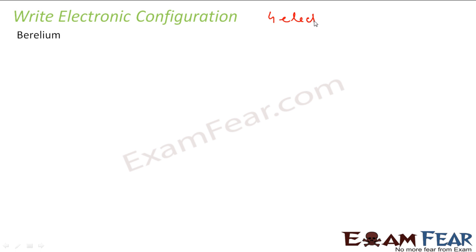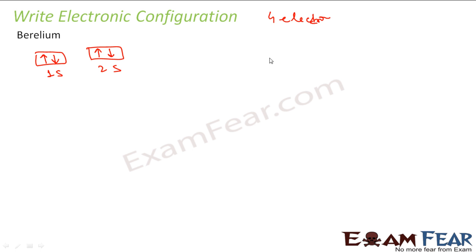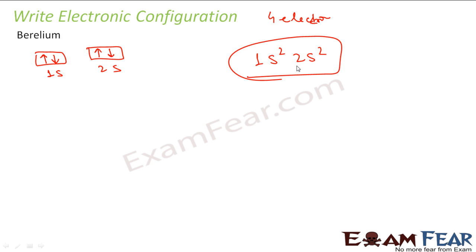Let's see beryllium. Beryllium has four electrons. I have the 1S subshell and the 2S subshell. The first electron sits in 1S, the second pairs up, the third comes into 2S, and the fourth pairs up there. In SPDF notation: 1S2 2S2, because each subshell has two electrons.